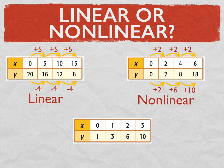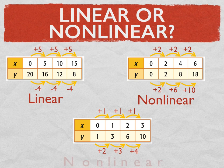The last table in this example, the x values are increasing by 1 each time. And then the y values first increase by 2, then it increases by 3, then it increases by 4. So this is nonlinear.